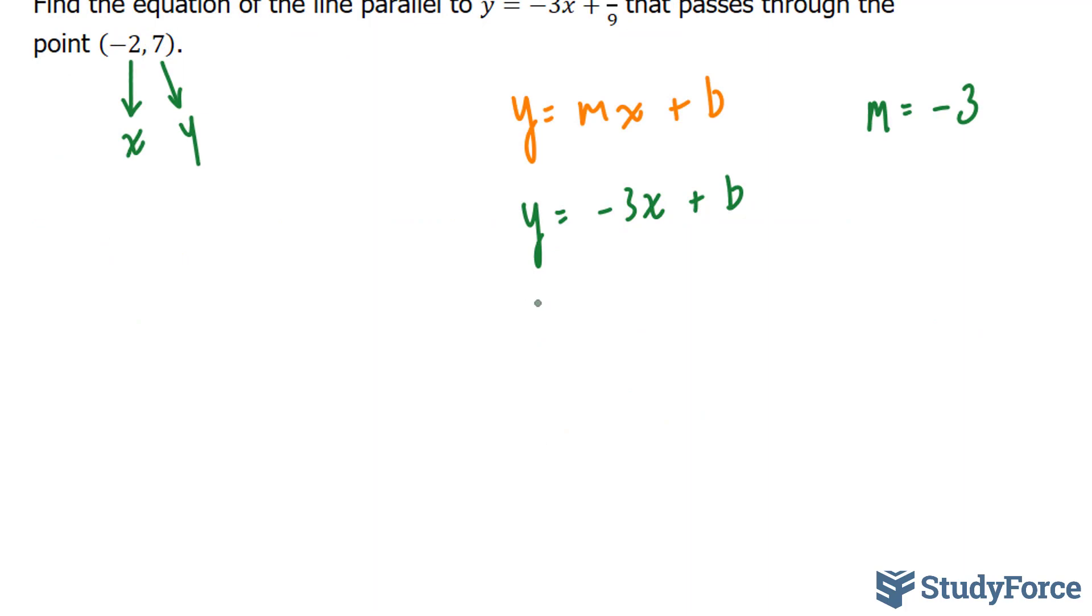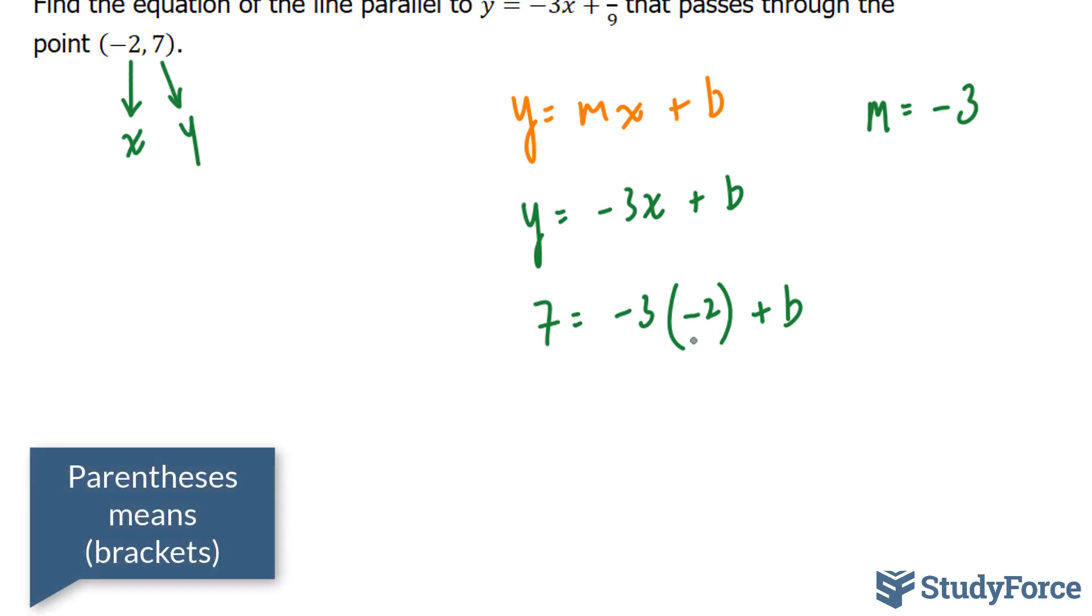Let's go ahead and do that. 7 will replace y: 7 equals negative 3 bracket negative 2 plus b. In case you're curious as to why I added these parentheses, it is because I'm substituting a value that is being multiplied to another. Notice that I substituted 7 into y, but I didn't add parentheses because it's not being multiplied to anything.